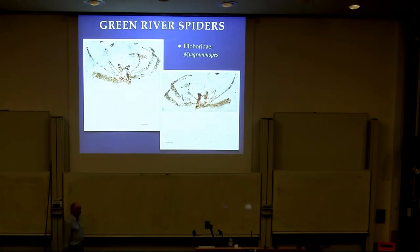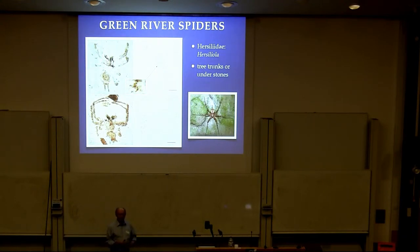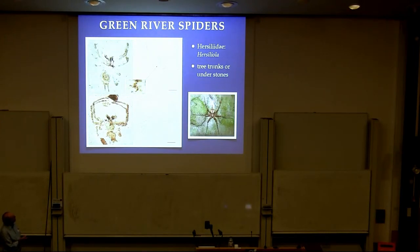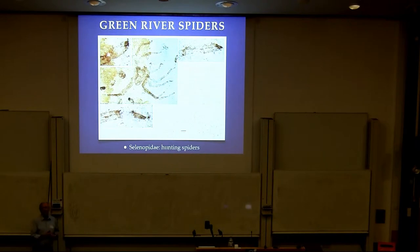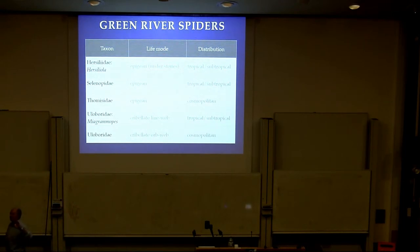This is another one — in fact, we can put it into a modern genus. Eercine spiders are very modern in appearance. Hercilius — this one goes into the modern genus Herciliola. Many of these things are fast-running spiders on tree trunks, but you also find them under stones. So a variety of different kinds of spiders occur there — mostly living under stones or on the ground, some making capture webs and euloborids. They're mostly tropical, subtropical, which works with all the other biota to tell us this is a subtropical or tropical environment.